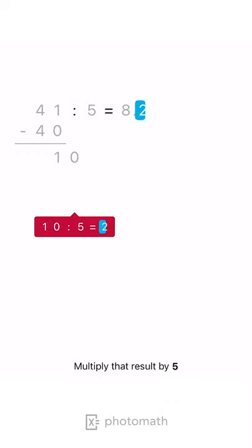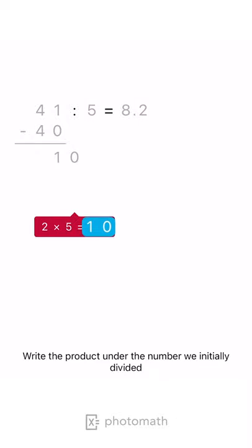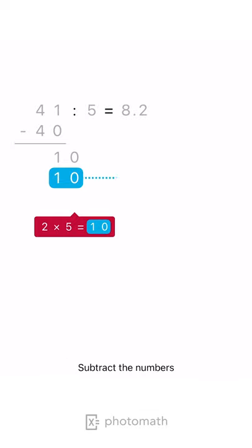Multiply that result by 5. Write the product under the number we initially divided. Subtract the numbers.